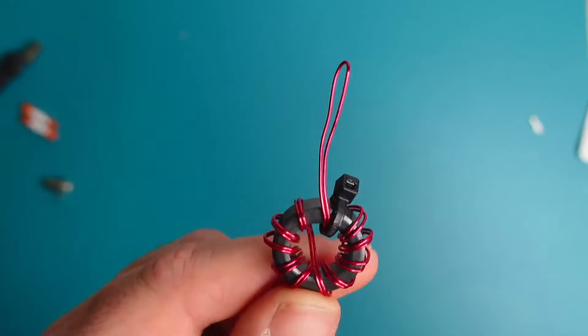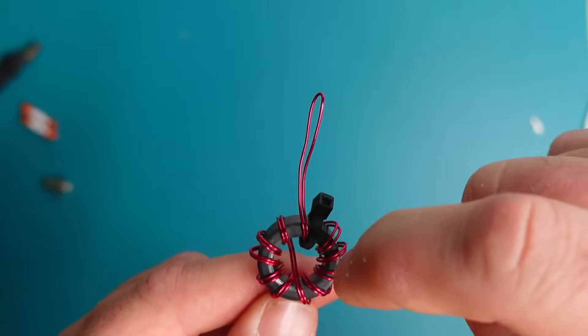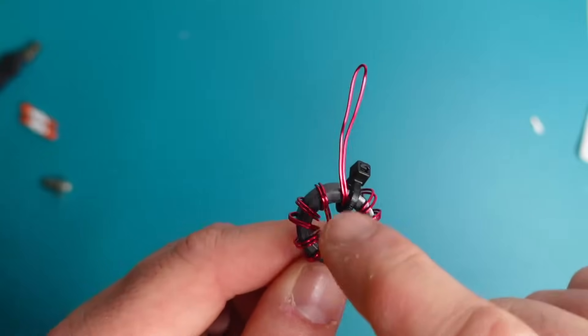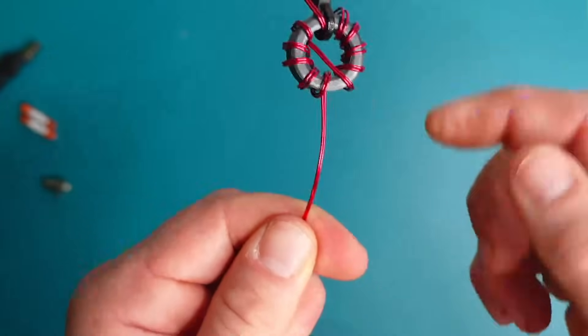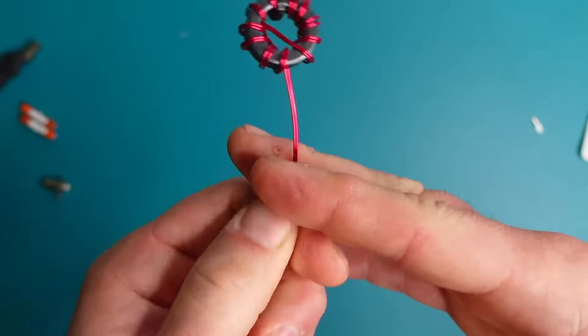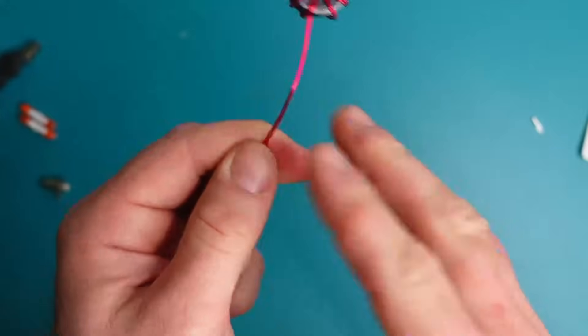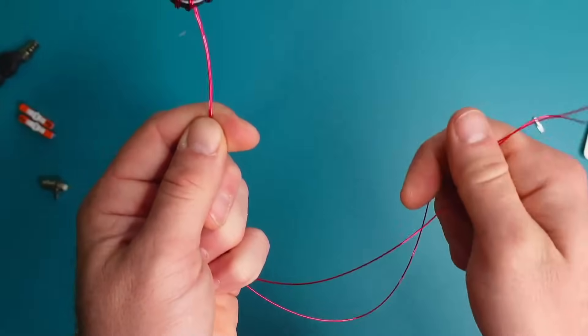If we count our toroid turns now we have one, two, three, four, five, six, seven, eight, nine, ten, eleven. So let's go ahead and leave ourselves some extra wire to work with and cut off the extra magnet wire.